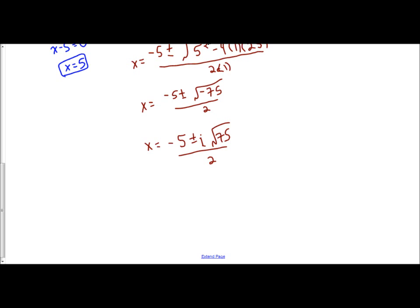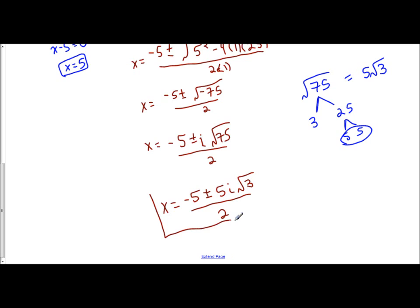And now simplify the square root of 75. Let's see, 75 is 3 times 25. 25 is 5 times 5. You got a pair of 5, so it's 5 square root of 3. So I have x equals negative 5 plus or minus 5i square root of 3 over 2. And that cannot be simplified anymore. So there's your answer.